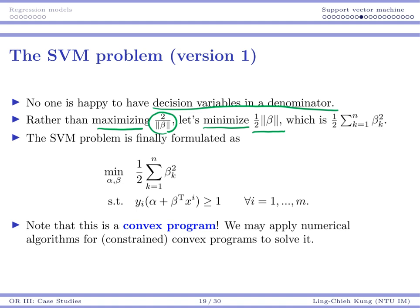So now we want to minimize 1 half times the norm of beta. The norm is actually beta 1 squared plus beta 2 squared plus beta n squared.